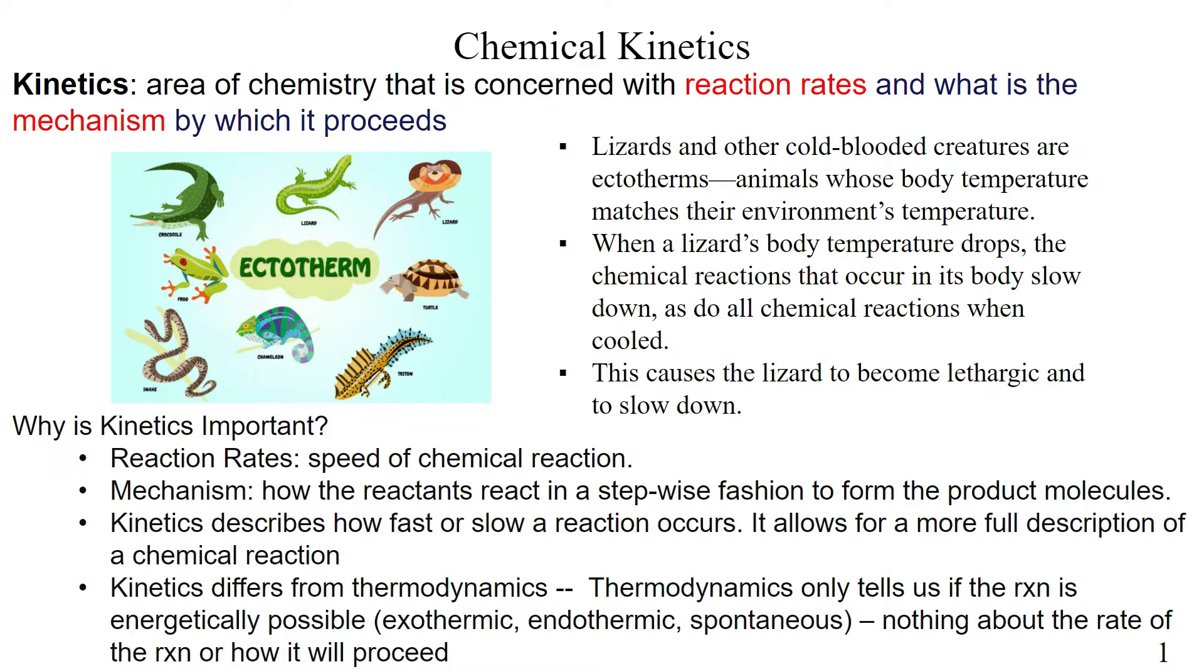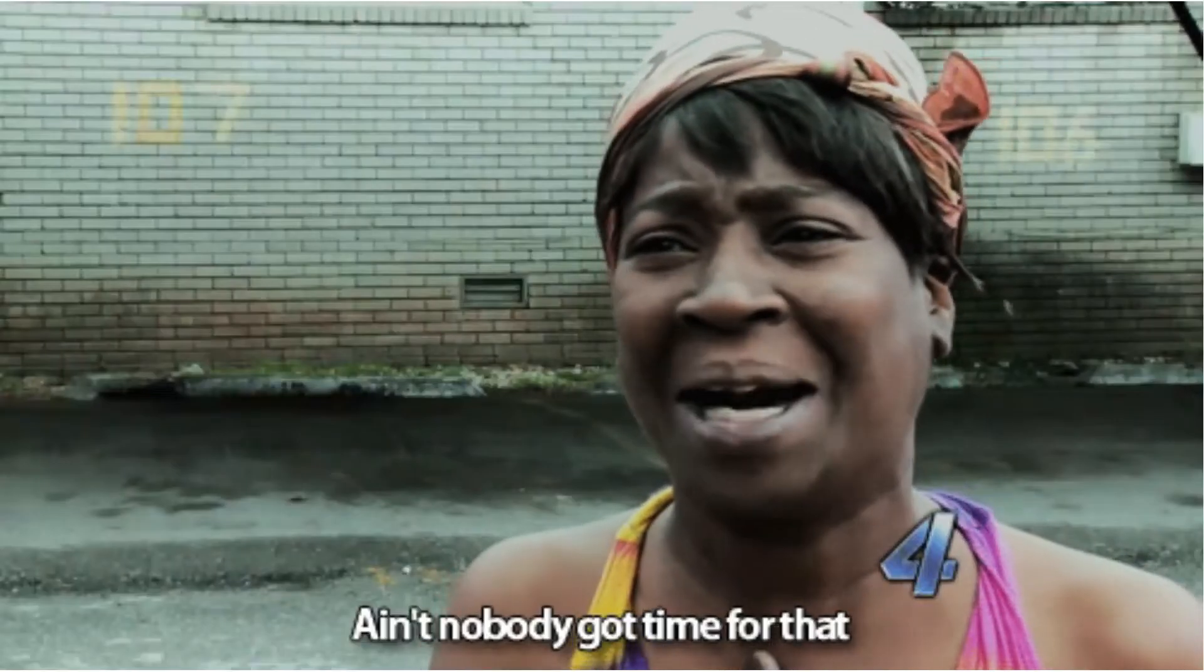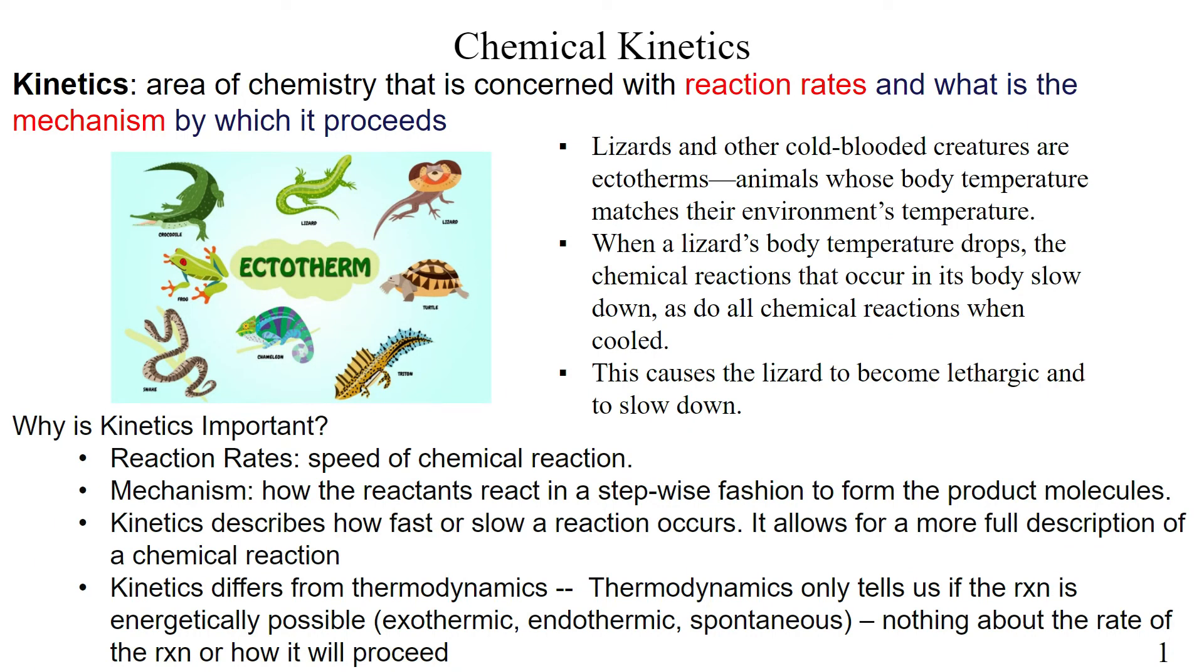Because, you know, the more you can produce, the more we can sell. So you got a slow reaction. Nobody wants a slow reaction. It's going to take all day. Why do a reaction that takes 24 hours when you could do it in 10 seconds? So reaction rates are definitely key, as well as I mentioned the mechanism. So mechanism is basically how the reactants react in a stepwise fashion to form whatever product we're trying to make. So kinetics can basically describe how fast or slow a reaction occurs, and it allows for more of a full description of a chemical reaction.